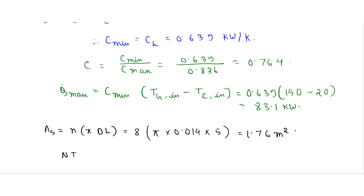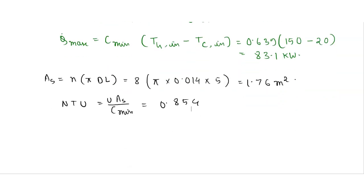Now we have to find the value of NTU. NTU equals U times A_s divided by C_minimum. Putting in these values, we get NTU equals 0.854. From the table, the effectiveness of the heat exchanger corresponding to C equals 0.764 and NTU equals 0.854 gives effectiveness epsilon equals 0.47.